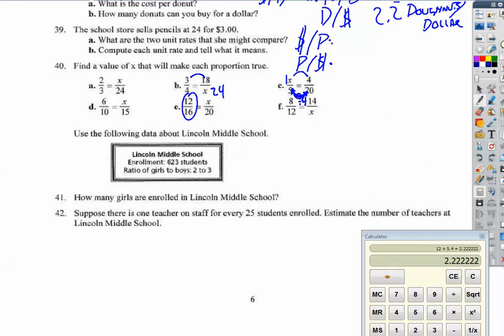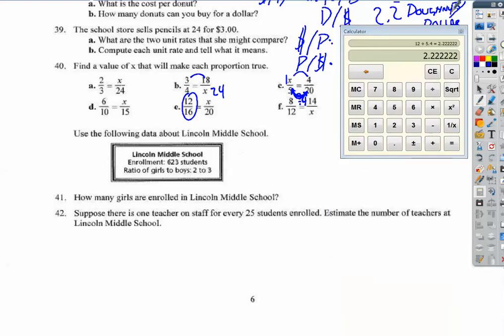This will be the last one I'm going to video. How many girls are enrolled in Lincoln Middle School? So we have 3 girls in every 5 students. And how do I get that? 2 plus 3 is 5. So this is a total. So that means for my proportion, total has to be on the bottom. And we'll have girls in the numerator. So we have 623. And we have x.